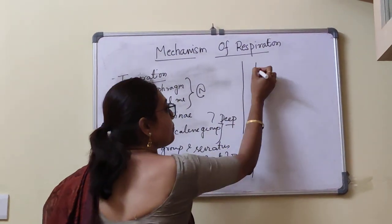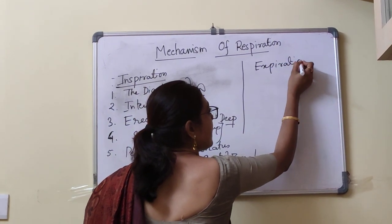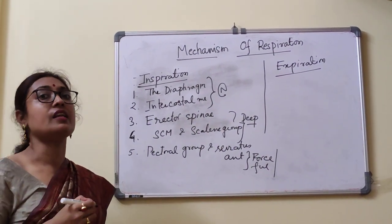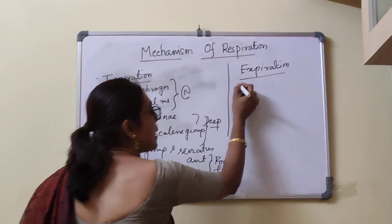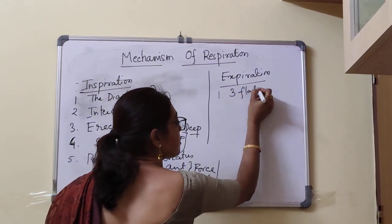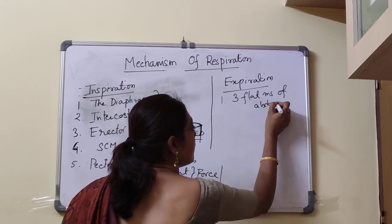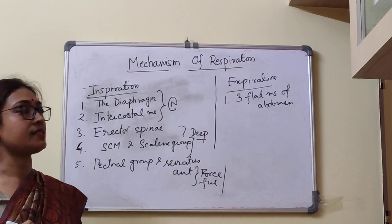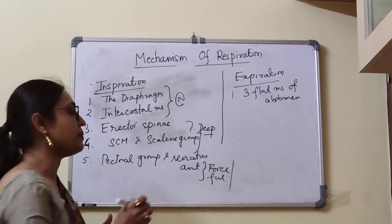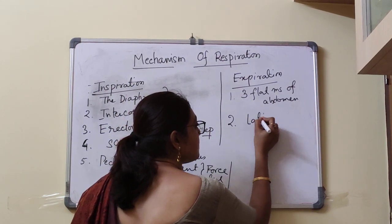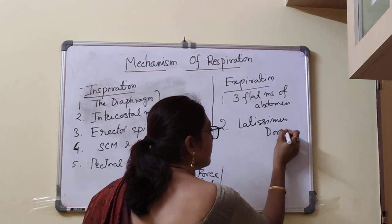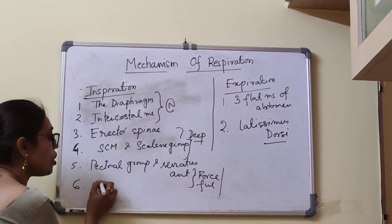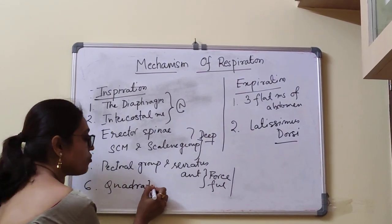For the muscles of expiration: as mentioned, normal expiration is a passive process, so no muscle is required — it is done by elastic recoiling of the lung. However, in case of deep or forceful expiration, the abdominal muscles are involved: the three flat muscles — external oblique, internal oblique, transversus abdominis — as well as rectus abdominis, latissimus dorsi, and quadratus lumborum.